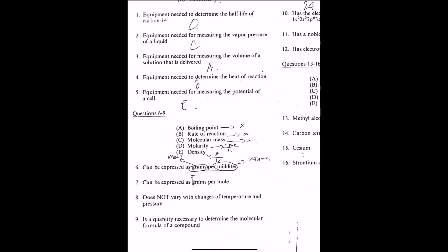Number seven, can be expressed as grams per mole. This one should be the molecular mass. That is because if you look at the periodic table, for example, for fluorine, the atomic mass is about 19 grams. So in one mole of fluorine, there's 19 grams. So it should be the molecular mass.